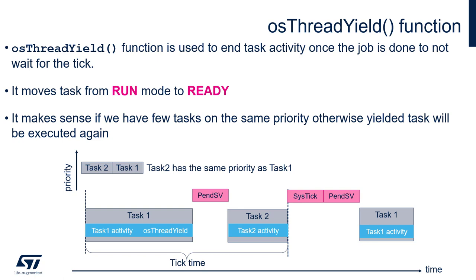This makes sense if you have a few tasks on the same priority level. Otherwise, the yielded task will be executed again as it is the task with the highest priority. Let's analyze the situation shown in the diagram — we have two tasks, Task 2 and Task 1, on the same priority level.